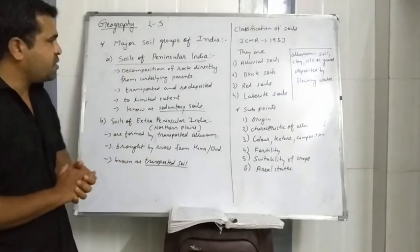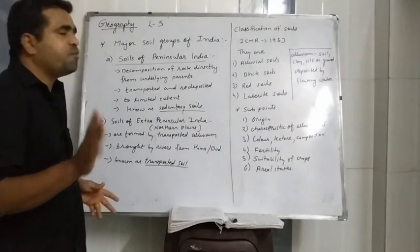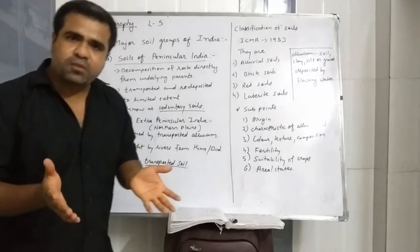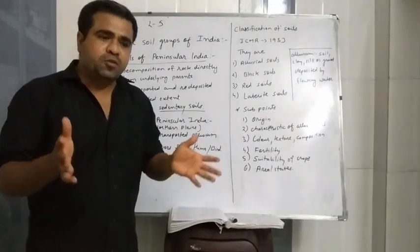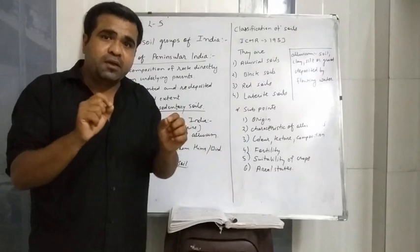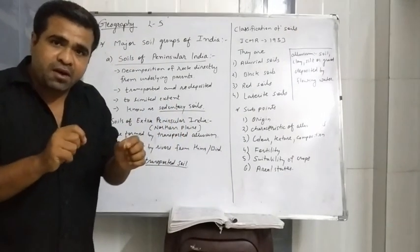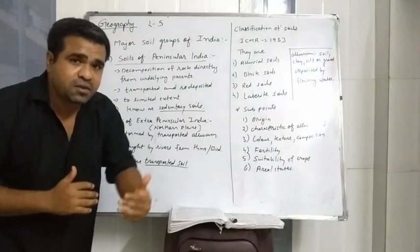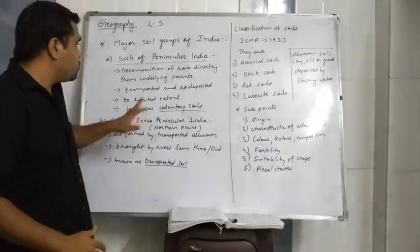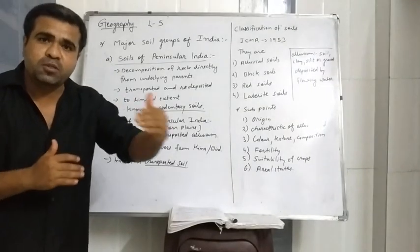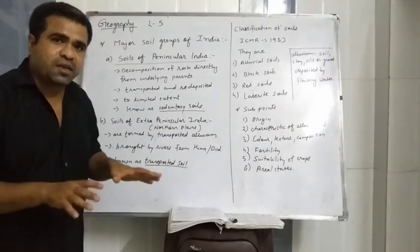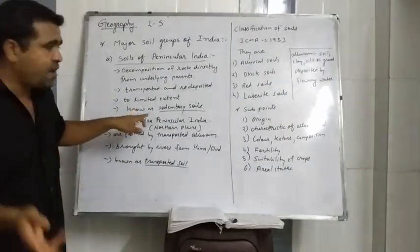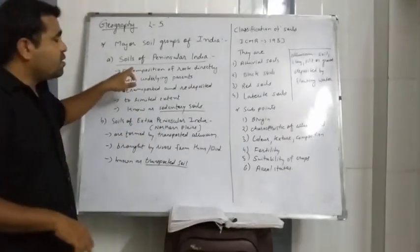In Peninsular India, soil is formed by the decomposition of rock directly from the underlying bands — rock, small sand, clay, silts, and gravel. There is limited transportation involved. This is called soil of Peninsular India, also known as sedentary soil.